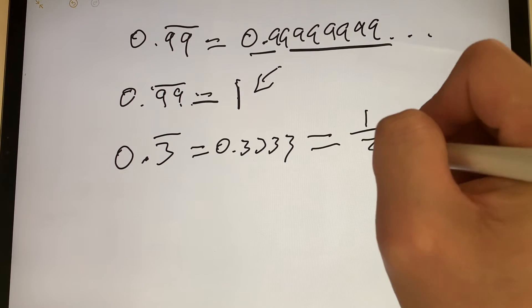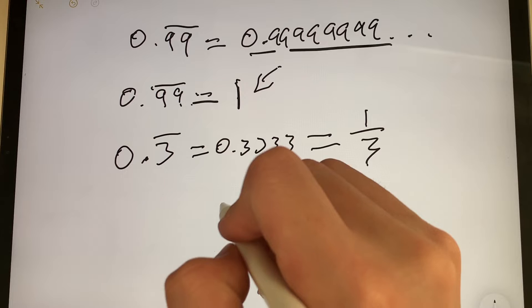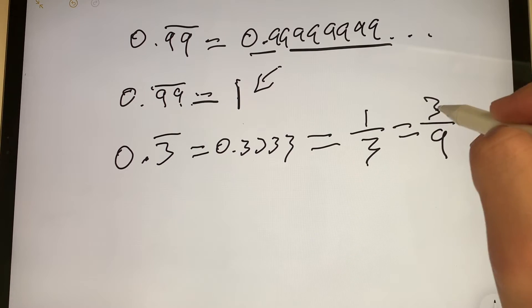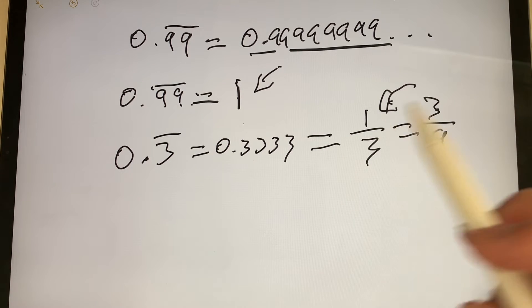It's equal to 1/3. And how is it equal to 1/3? Because all you have to do is put the 3 over 9. So in this case, the 3 is over a 9. 3/9 is equivalent to 1/3. And that's how you put any repeating decimal into fractional form.